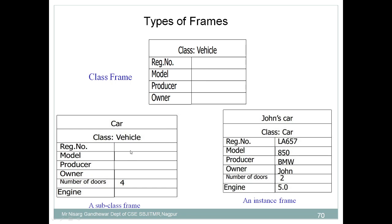This is an example of a subclass frame. If you are aware of the concept of inheritance, then in inheritance we have a base class and a derived class. Similarly here, the base class is vehicle and the derived class is car. Car is a derived class whereas vehicle is the base class. It is represented with various attributes: registration number, model number, producer, owner, number of doors, and engine. This is another type of frame called a subclass frame.